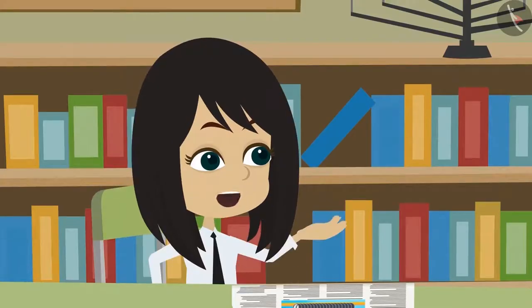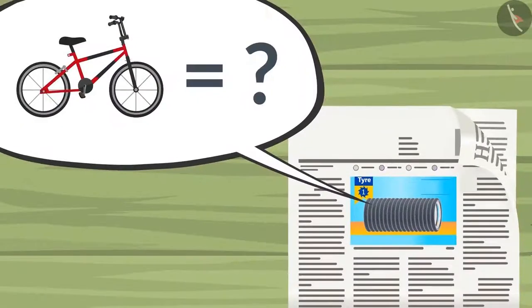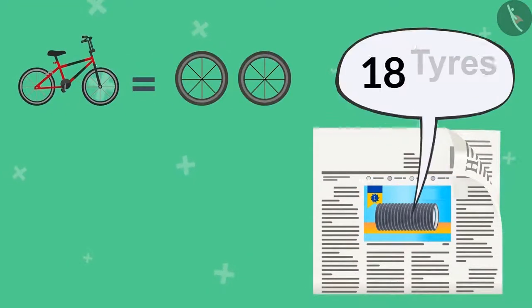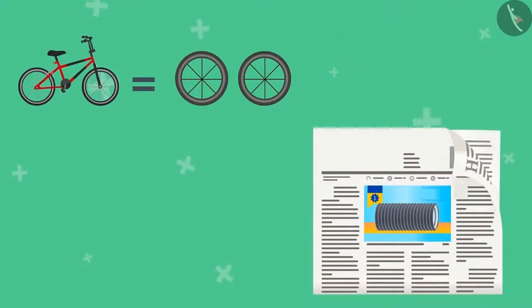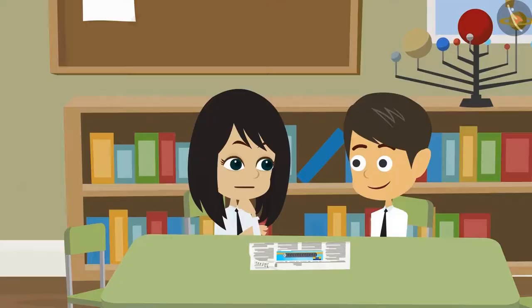If these are bicycle tires, can you tell me how many bicycles do they belong to? A bicycle has 2 tires and there are a total of 18 tires. 2 nines are 18, this means these tires belong to 9 bicycles.